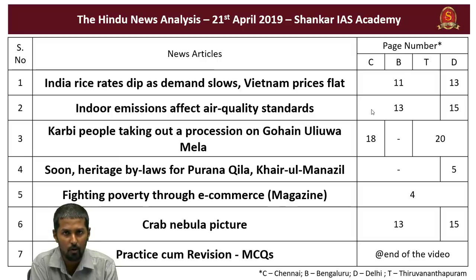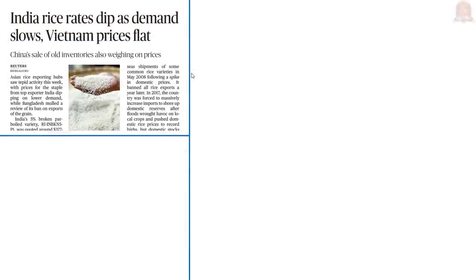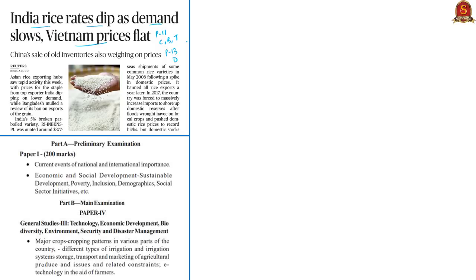The first news article of the day is 'India Rice Rate Dip as Demand Slows, Vietnam Prices Flat.' This appears in page number 11 of Chennai, Bengaluru and Thiruvananthapuram editions and in page 13 of the Delhi edition. This will be helpful in prelims preparation under current events of national importance and economic development, and for mains preparation in General Studies paper 3 under major crops, cropping patterns, transport and marketing of agricultural produce.